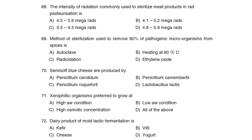68th Question: The intensity of radiation commonly used to sterilize meat products in radappertization is Correct Answer: Option A: 4.5 to 5.6 kGy. 69th Question: The method of sterilization used to remove 90% of pathogenic microorganisms from spices is Option D: Ethylene oxide.